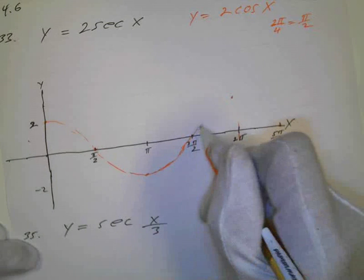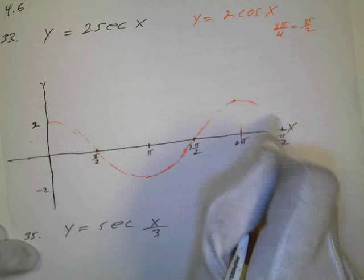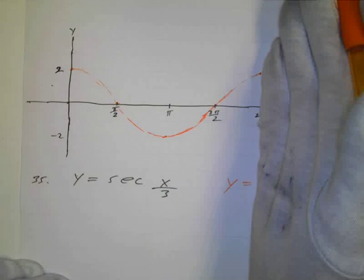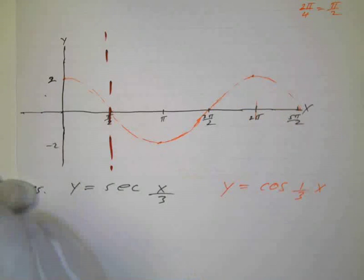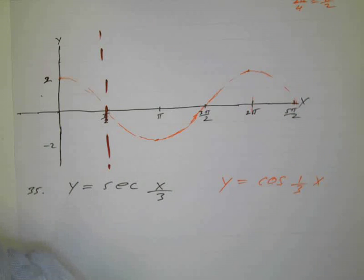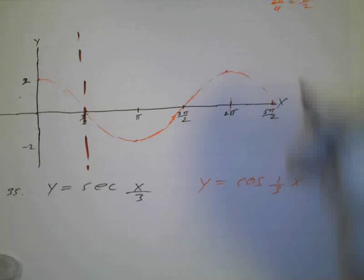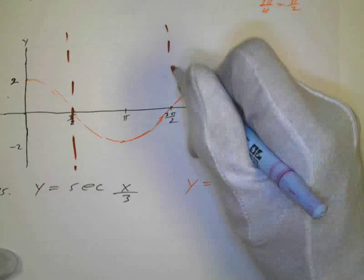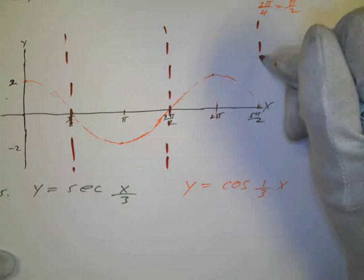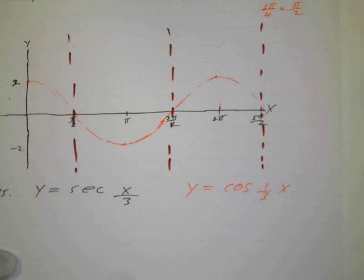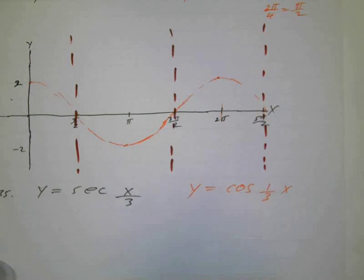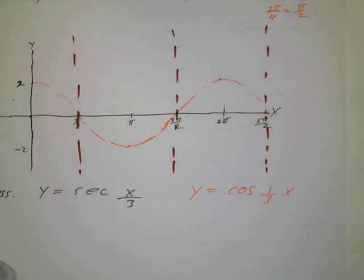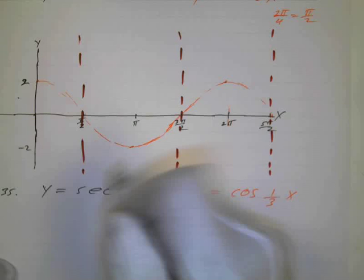And it would be nice if we could do these all on the same scale so we could get an idea what they are, but just trying to make it practical so it fits on the page here. And I did a little bit more than one period. That's one period, I just did a little bit more because when I put the asymptotes in, they're going to be over here.